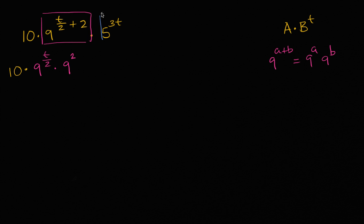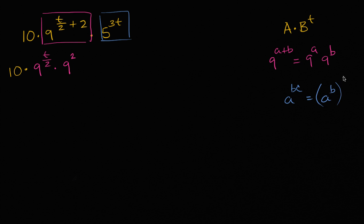Now let's move over to 5 to the 3t. If I have a to the bc — and you could view this as 5 to the 3 times t — this is the same thing as a to the b, and then that to the c power. So I can write this as 5 to the 3rd, and then that to the t power. The whole reason I did that is this becomes just a number raised to the t power, which is what I want.